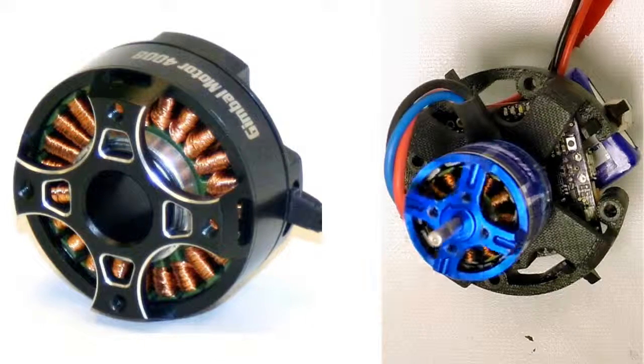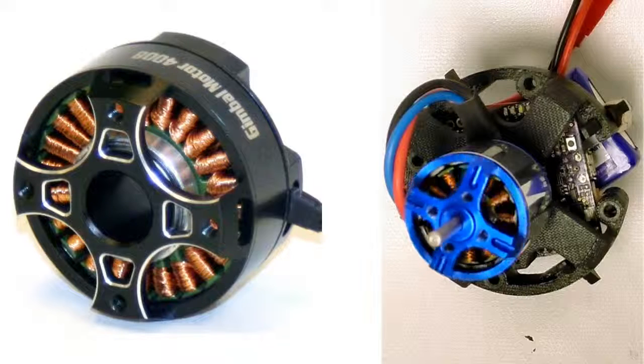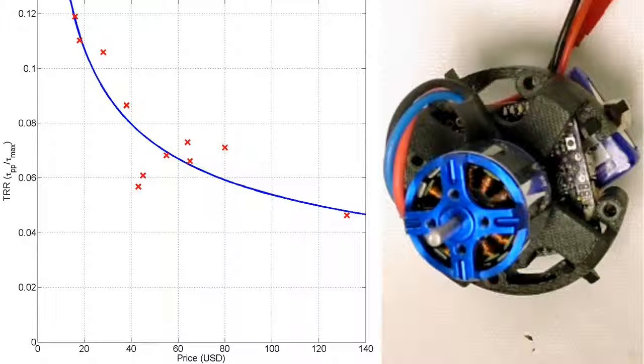This motor should run smoothly, but it doesn't because of torque ripple. Across a wide range of motors, torque ripple and cost are inversely related. Here on the x-axis we have cost, on the y-axis is the torque ripple ratio, which is a measure of torque ripple, and you can see cheaper motors have more torque ripple.